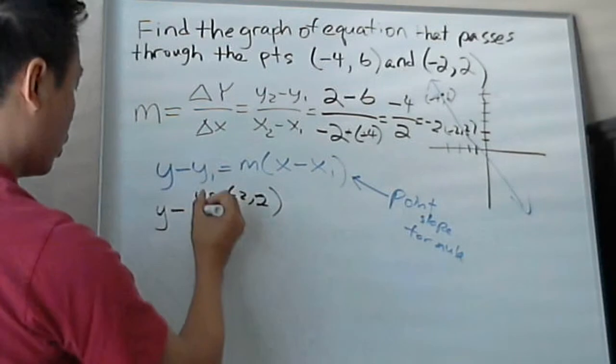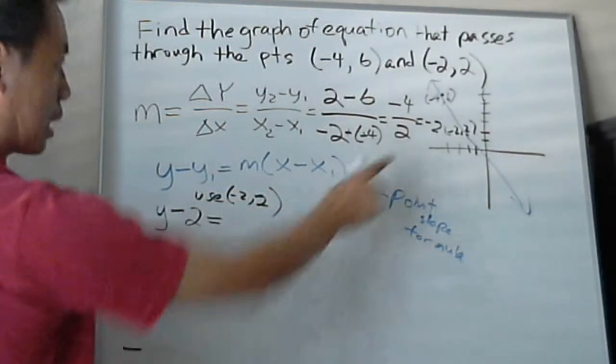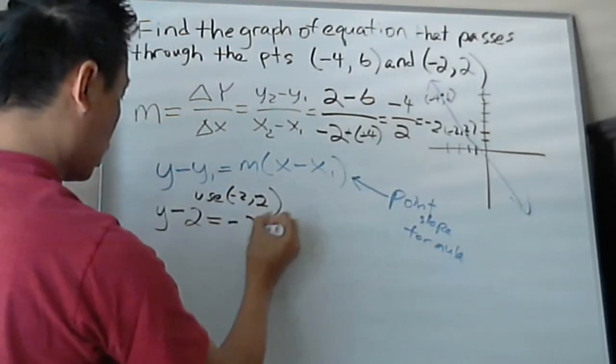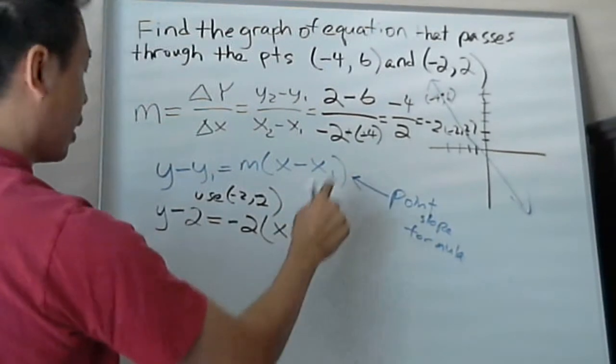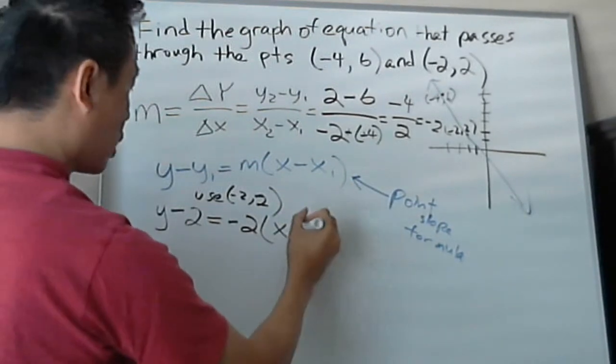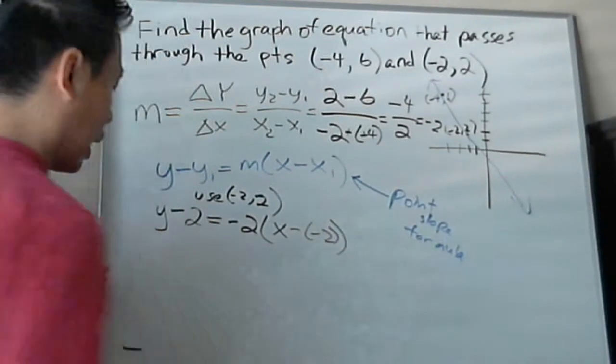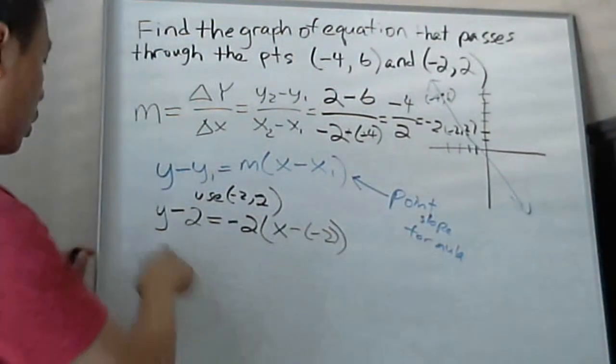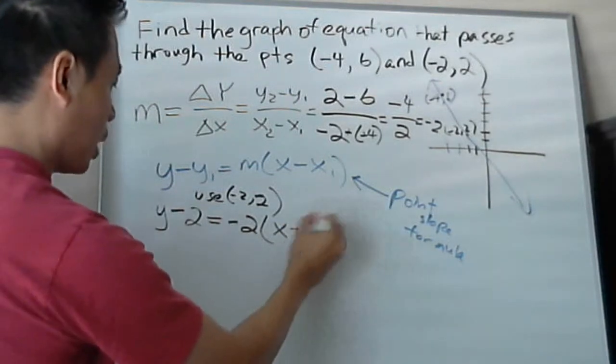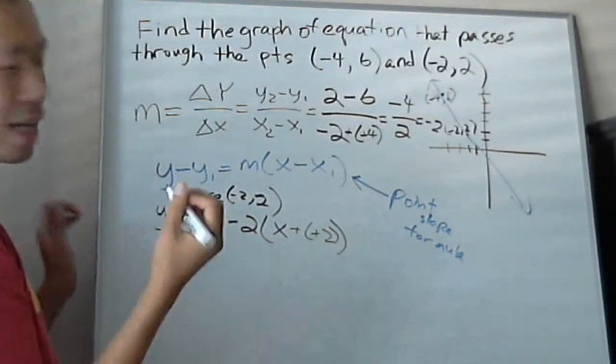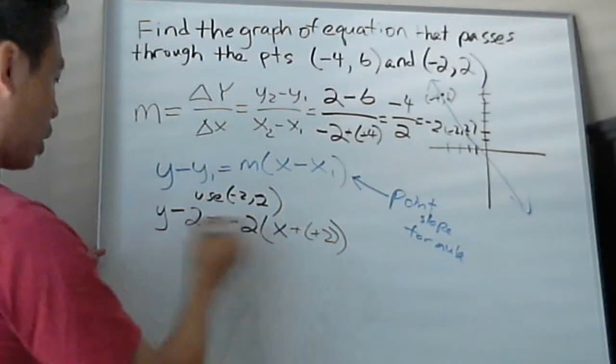So y minus what? 2 equals, the slope is negative 2, times x minus x1. So it's really minus negative 2. So you can have y minus 2 equals that. And what do you do? You just do that plus, right? It's minus minus. So save a step. So let's distribute this first.